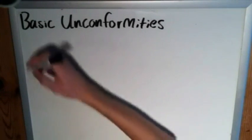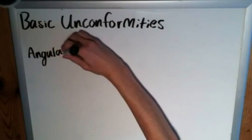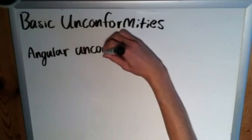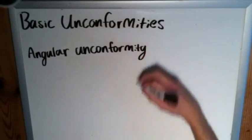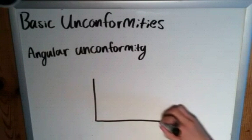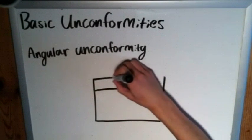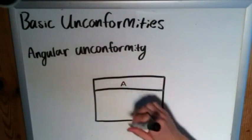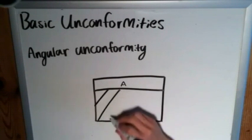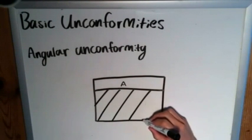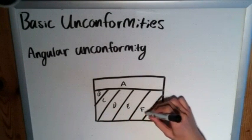The next one is similar but different in a key way. It's called an angular unconformity. Once again, we're dealing with sedimentary rock. Starting from the top, let's say we've got strata A here, and then below that we've got diagonally facing strata — a whole lot of it. We'll call it B, C, D, E, F, G.